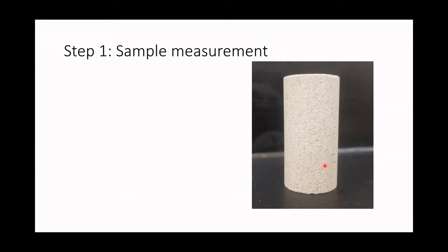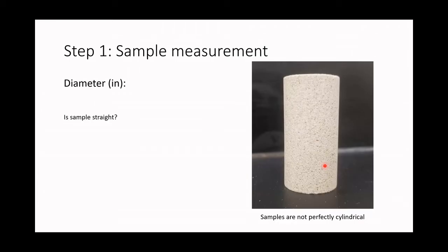In our first step, we have to not only measure the sample but also quality check it to see if it is actually a good sample to perform the measurements. This is because samples are not perfectly cylindrical. First we are going to control the diameter of the sample — the key question is whether the sample is straight. If it is straight, measurements at different parts of the sample are going to give nearly the same diameter.